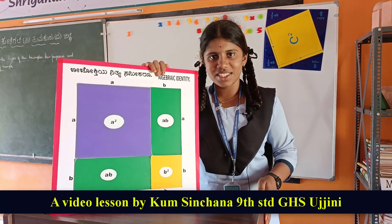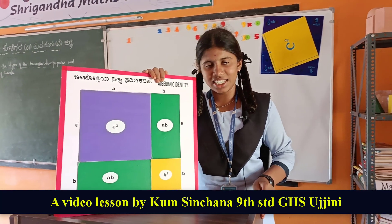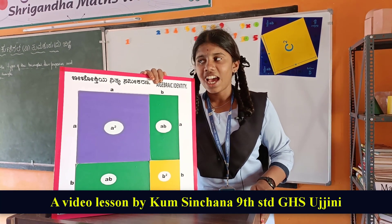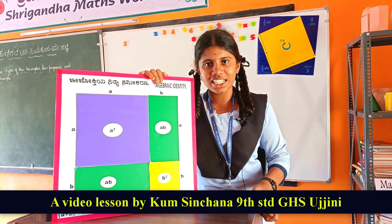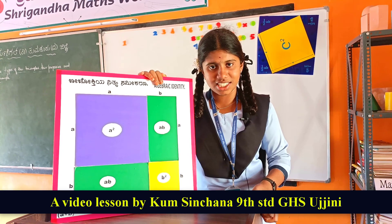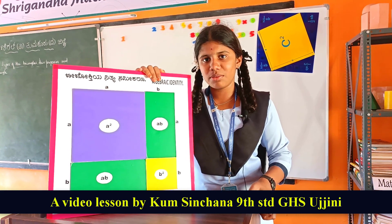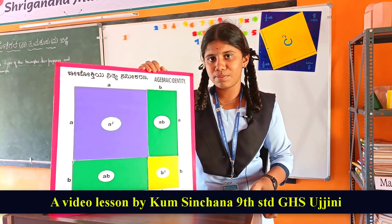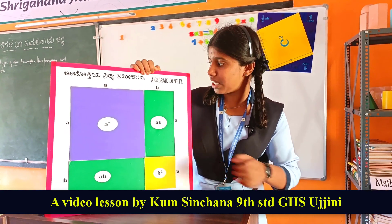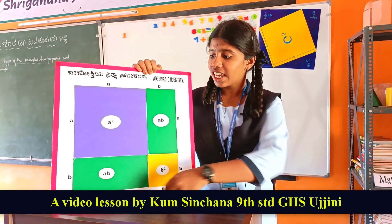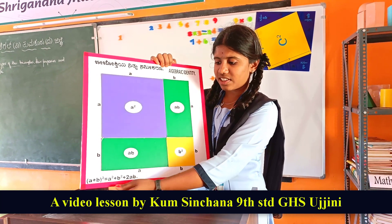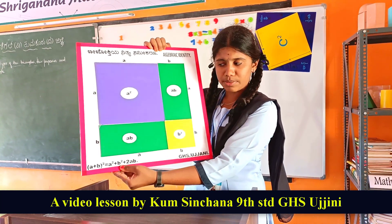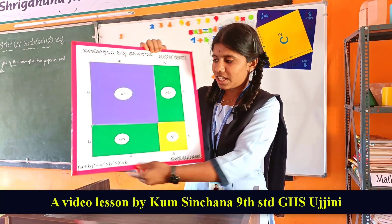Hi everyone, I am Sinchana. I am studying in 9th standard, Government High School, Ujimi, Kunigal Taluk, Tumkur District. Now I am going to explain the algebraic identity: (a + b)² equals a² plus b² plus 2ab.